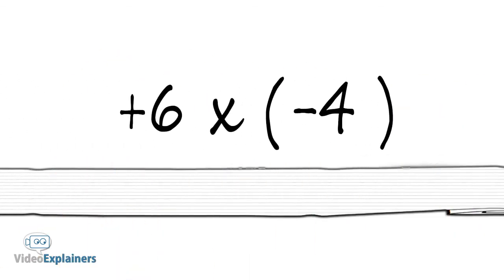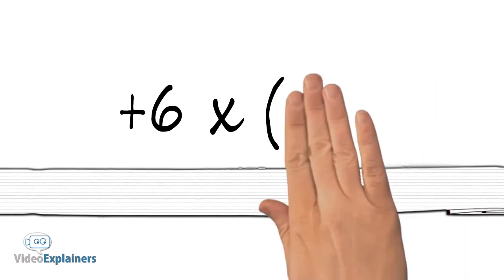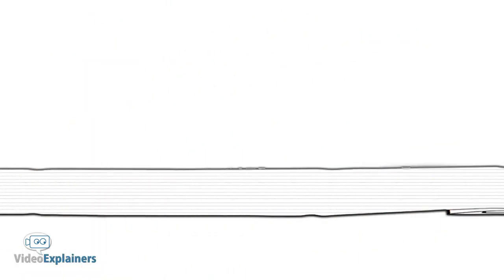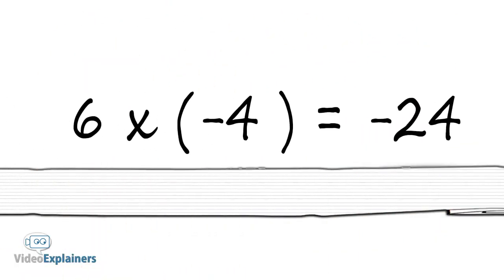Next, multiply positive 6 times negative 4. Two unlike signs make a negative sign. So 6 times negative 4 equals negative 24.